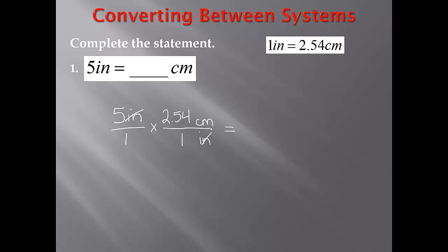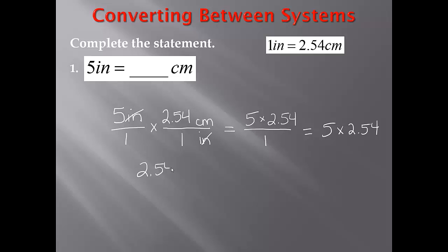Now I'm just left with centimeters, so I need to multiply 5 times 2.54. That will go in my numerator, and my denominator will be 1 times 1, which is just 1. So this is going to be equal to 5 times 2.54. So 2.54 times 5: 5 times 4 is 20, 5 times 5 is 25 plus 2 is 27, and 5 times 2 is 10 plus 2 is 12.